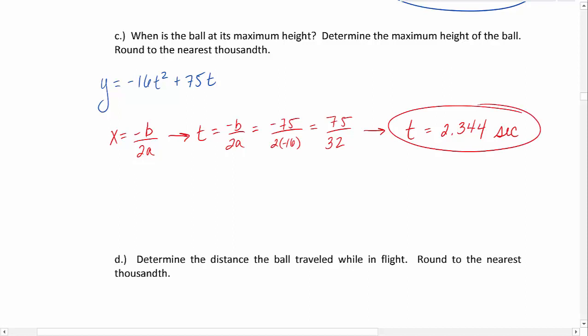There's a second question in this part C: what is that maximum height of the ball? We found the x-coordinate of the vertex, or t in this context, but now we need to find the corresponding y-coordinate of the vertex. We're going to take this t value and plug it back into our y equation. To get the most accurate answer, I would be inclined to plug this fraction in rather than my rounded t value. It's just going to give us a better number. y equals negative 16 times 75 over 32 squared plus 75 times 75 over 32. Plugging this into our calculator and rounding to the nearest thousandth, we get 87.891 feet.